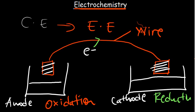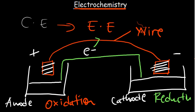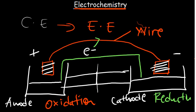Electrons move from the anode to the cathode. However, as electrons leave the anode side, charges become unbalanced — one side becomes positive and the other negative — and electron flow would stop. To allow continuous flow of current, we need to balance the charges in both solutions. This is why we use a salt bridge or a porous disk, which contains an electrolyte.